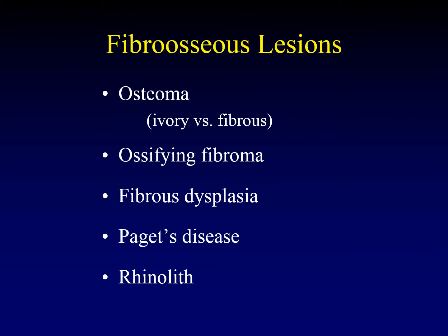Fibroosseous lesions of the sinonasal cavity can be very confusing, in part because they look a lot alike, although you can usually tell them apart. The other reason is that it's a bit of a word salad — fibrous osteoma, ossifying fibroma, fibrous dysplasia. They sound a lot alike, but they're really different things, and you can distinguish these things radiologically.